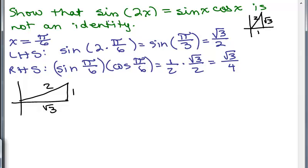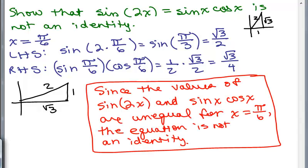So sine of 2x equals sine of x cosine of x is not going to be an identity. We write our answer as a sentence: since the values of sine of 2x and sine of x cosine of x are unequal for x equals pi over 6, the equation is not an identity. We did find a value of x that shows this is not an identity.